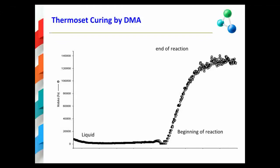From the data on this slide, you can see that the increase in E prime which is observed is due to a chemical reaction, which in this case is known as gelation. That is a reaction that begins to create the three-dimensional crosslink network in this particular polymeric material.